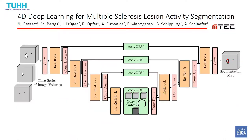For this purpose we propose an encoder convolutional gated recurrent unit decoder architecture that can process an arbitrary number of time steps. We find that this architecture outperforms the previous two-path model and that using three instead of two scans appears to be helpful.